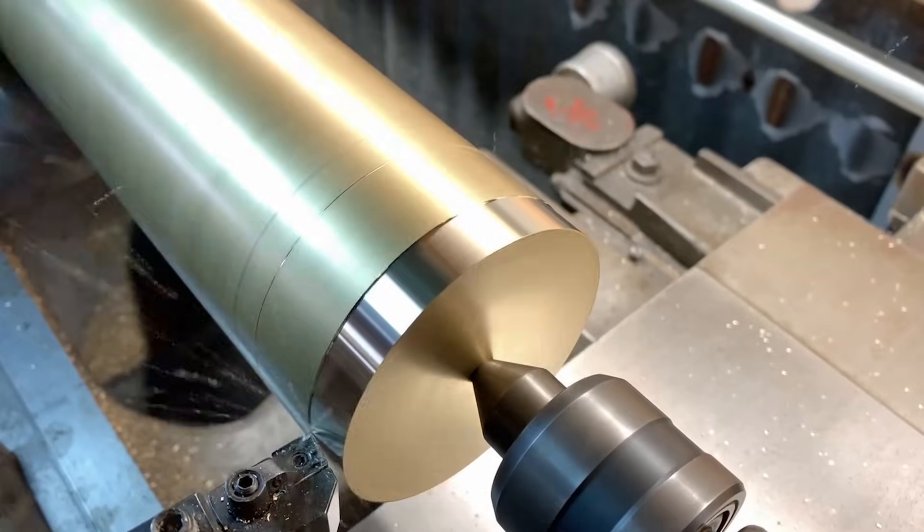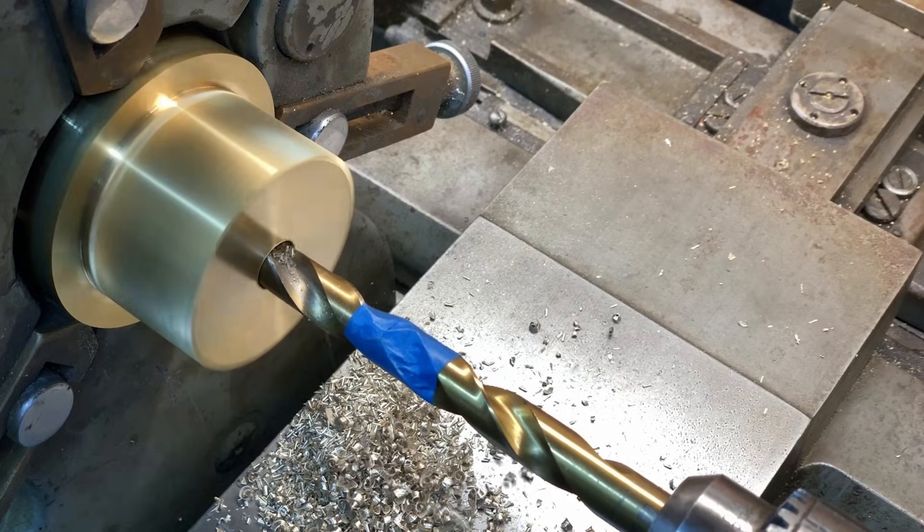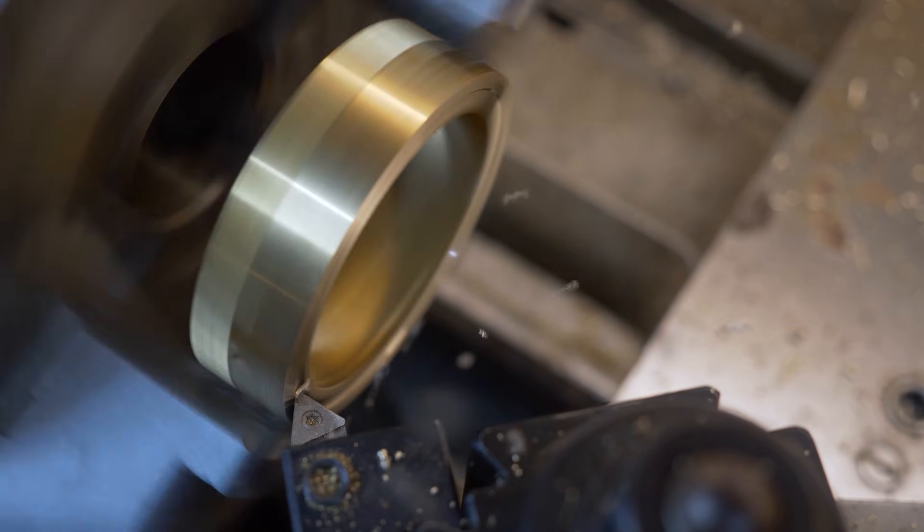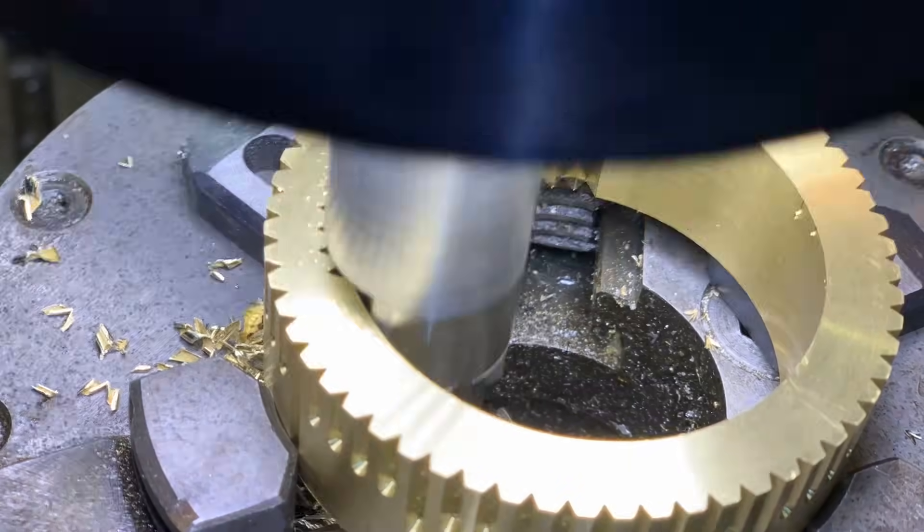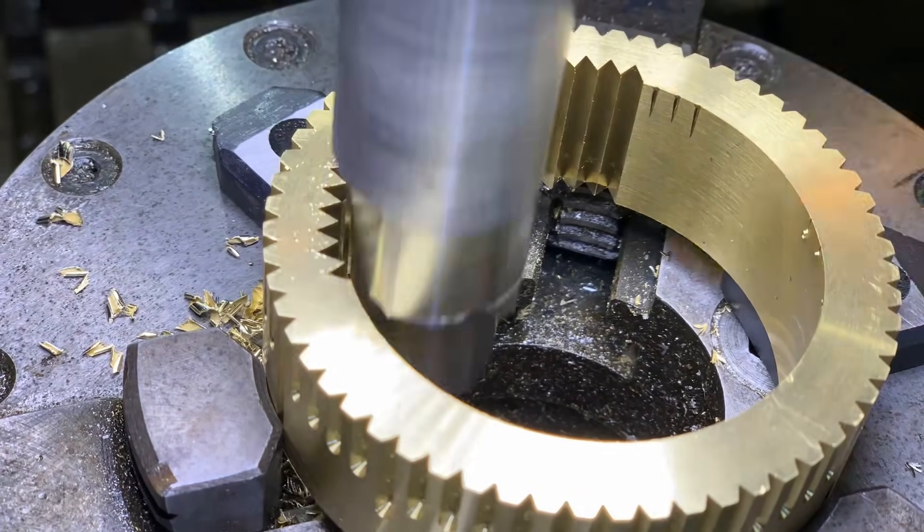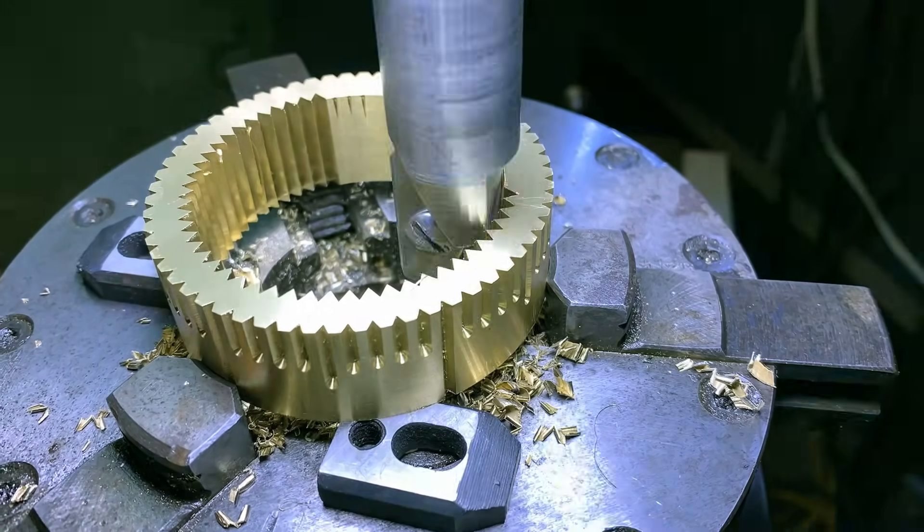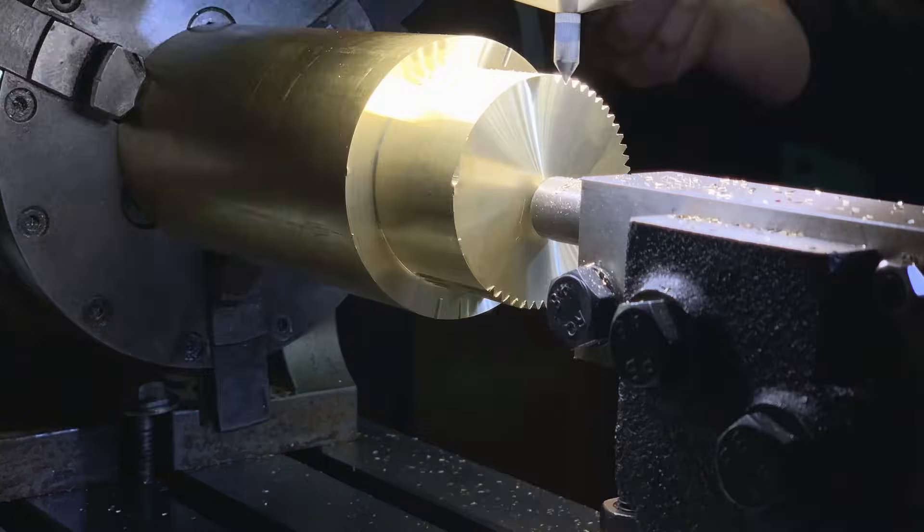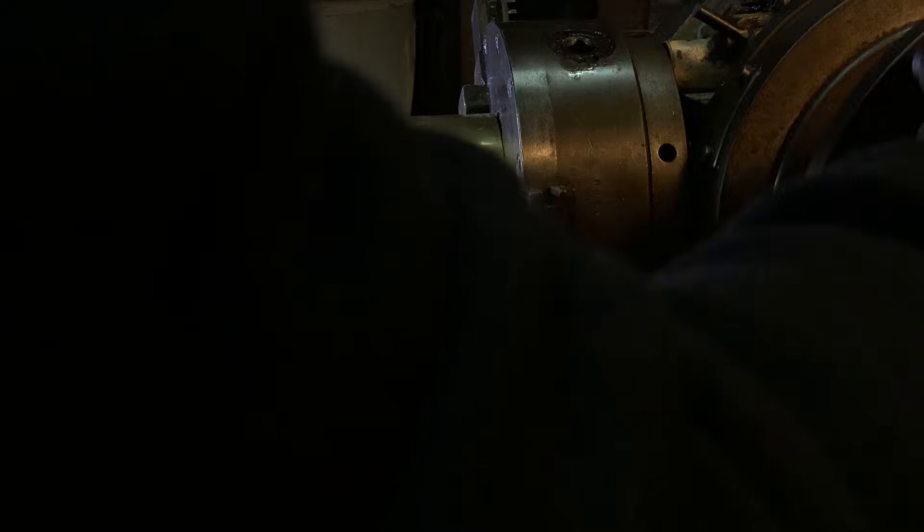Longtime viewers of the channel may remember a few years ago when I made a part for the Marble Machine X. The hows and whys I made this are actually really interesting and I'll leave links in the description. But the important part is that Martin needed a device to change the angular relationship between a shaft and a gear so it could rotate and change the relative timing of his machine.